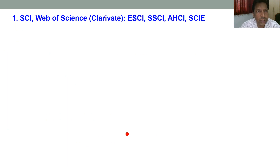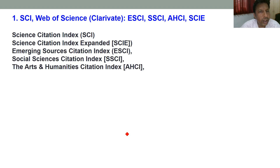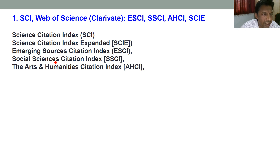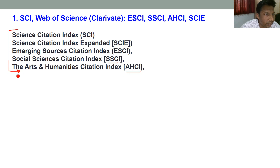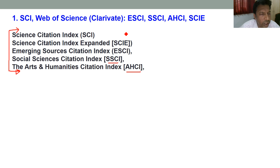The first major indexing system is Web of Science, which is provided by Clarivate. There are five types of different indexing systems under the Web of Science banner. First is the Science Citation Index, now known as Science Citation Index Expanded, that is SCI-E. Then there is the Emerging Source Citation Index, known as ESCI; the Social Sciences Citation Index, known as SSCI; and the Arts and Humanities Citation Index, known as AHCI. These five indexing systems are considered the topmost citation indexing systems, and if your journal article, book, or book chapter is indexed in any one of these five, it is treated as a world-class publication.